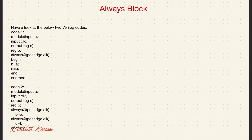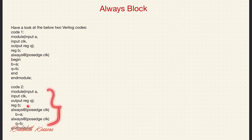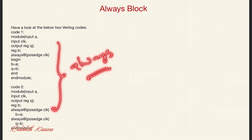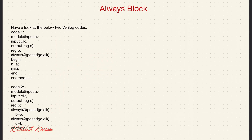Hey guys, welcome. This is the question that I posted on LinkedIn. In the first code we have only one always block but two statements. In the second code we have two always blocks but only one statement in each block. So what circuit does this code synthesize to? To understand this, we need to know the working of always blocks in Verilog.